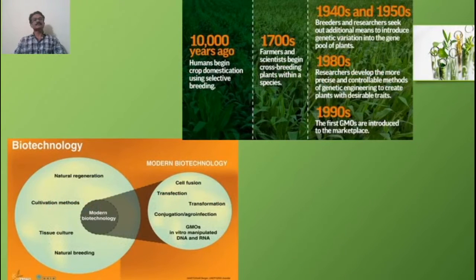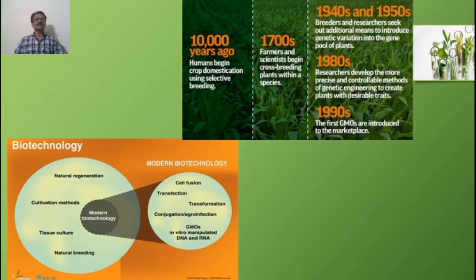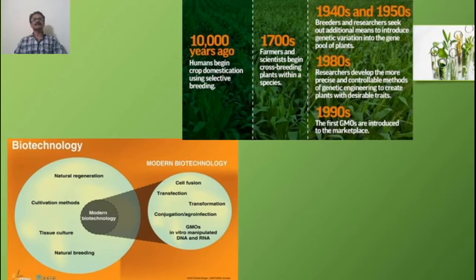Since the inception of this field, we have seen a shift from classical to modern biotechnology. Initially, we studied natural regeneration, cultivation methods and practices, tissue culture, and natural breeding processes. Later, we started studying cell fusion, transfections, transformations, conjugations, agro-infections, GMOs, and in vitro manipulation of DNAs and RNAs under modern biotechnology.